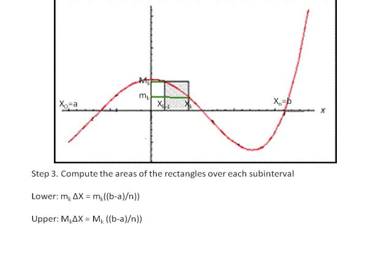Step 3. Compute the areas of the subintervals. We can do this either by using the maximum or minimum f value in the subinterval. Using the minimum, the area of the rectangle is small mk times delta x, which is equal to small mk times b minus a over n.